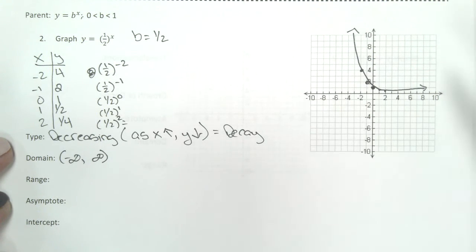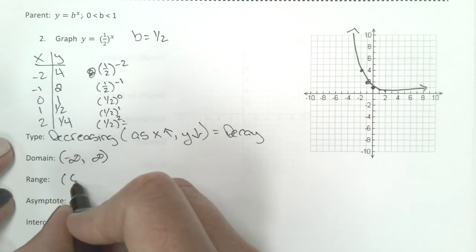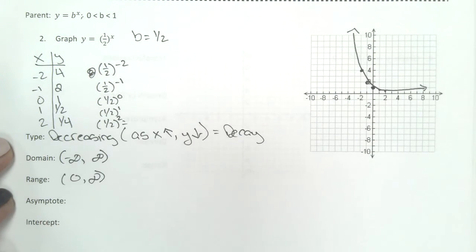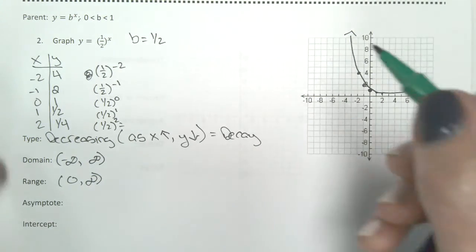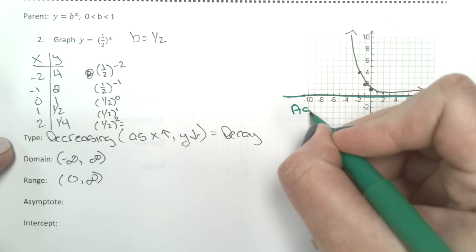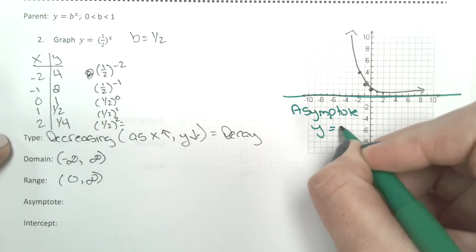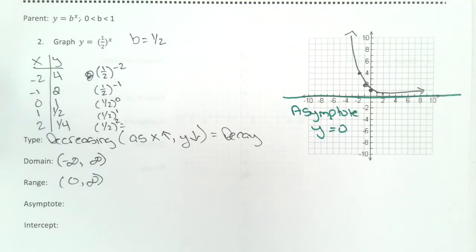Your range, it looks like it's the same thing actually. It goes 0 to infinity. I also, on this one, have an asymptote at y equals 0.